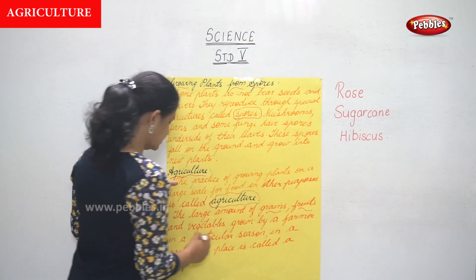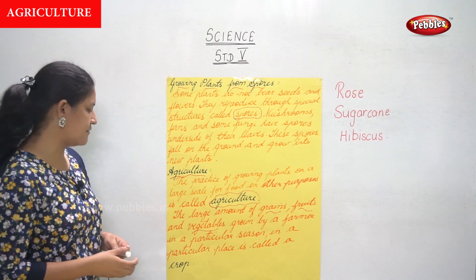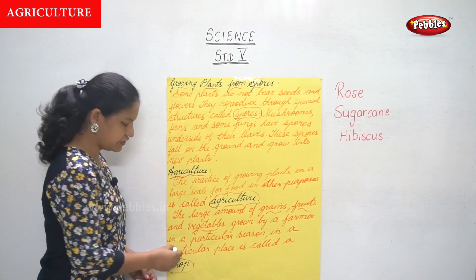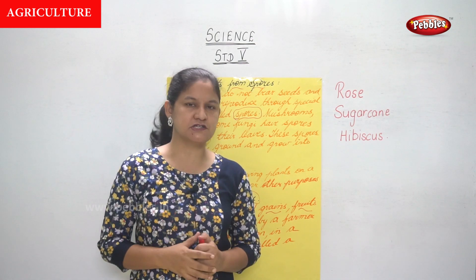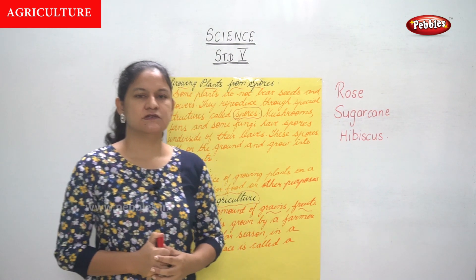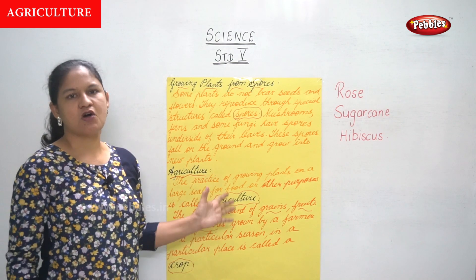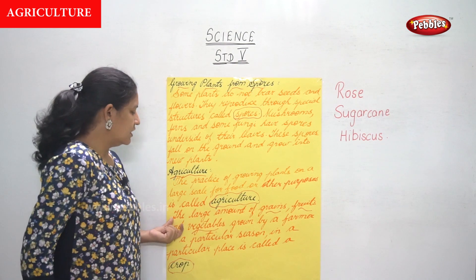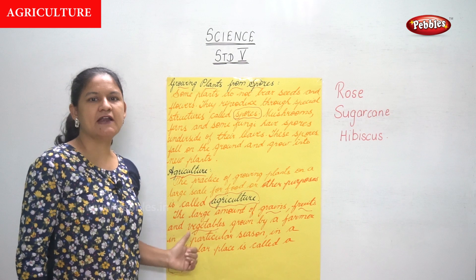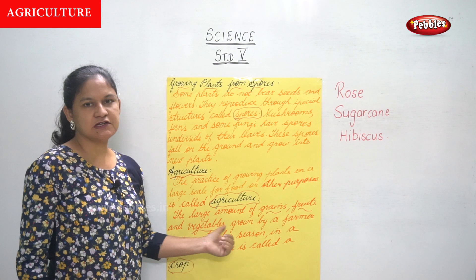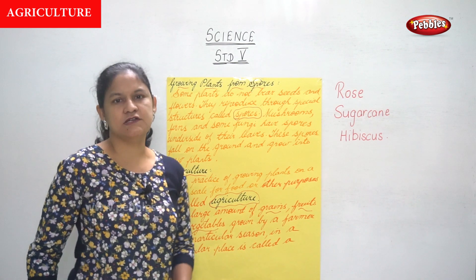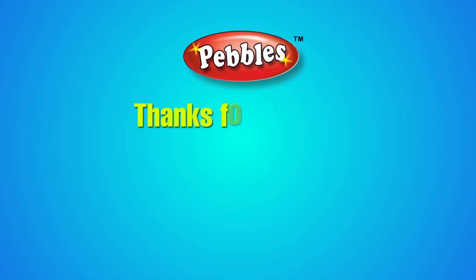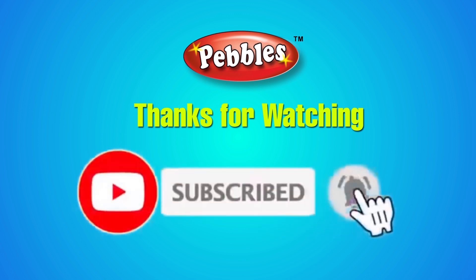The large amount of grains, fruits, and vegetables grown by a farmer in a particular season in a particular place is called a crop. Certain crops can be grown only in one particular season and one particular place. So we have learned two new terms — agriculture and crop.